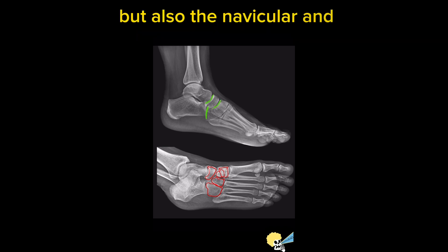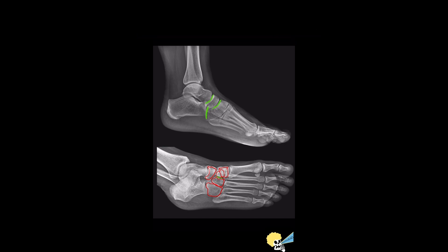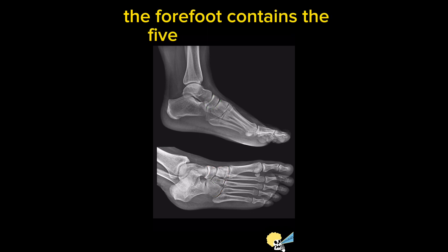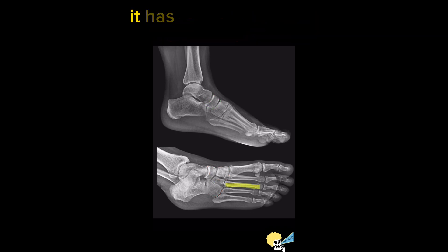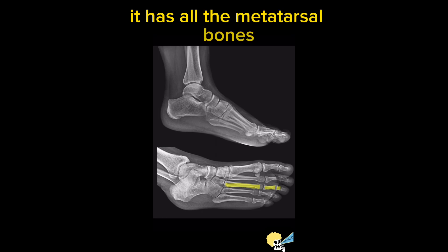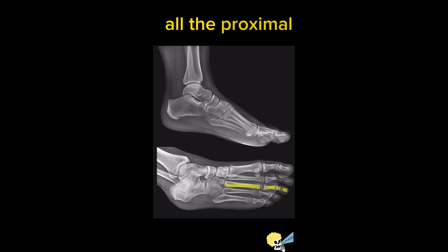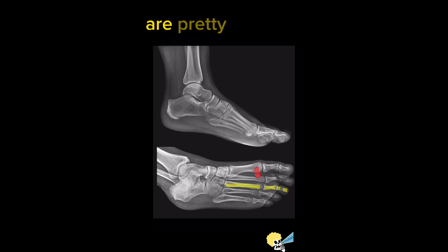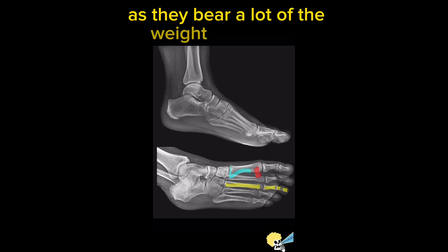Also important is the navicular and cuneiform articulation. The forefoot contains the five toes and for that reason has all the metatarsal bones and all the proximal, mid, and distal phalanges. Remember that we also have the sesamoid bones, which in the hallux are pretty important as they bear a lot of the weight of the body.